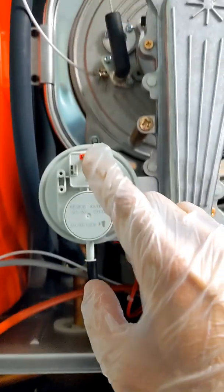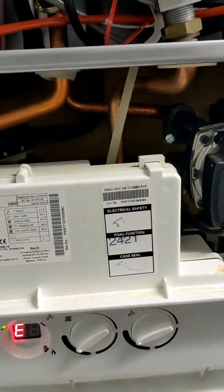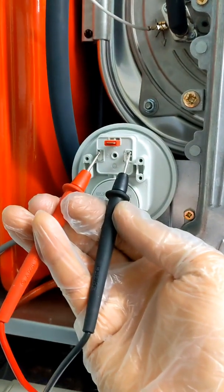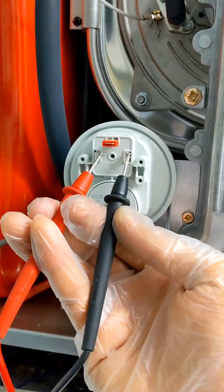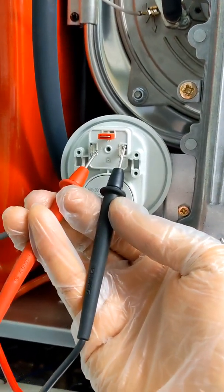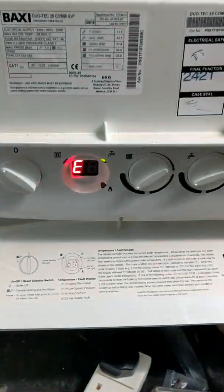That relates to the air pressure switch. At rest, I should have continuity across this. There's no continuity across that, but as soon as I bridge out the connections on the air pressure switch...